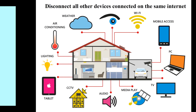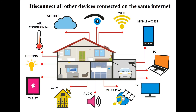Method 4: Disconnect all other devices connected on the same internet. If you don't have any other network available, try disconnecting all devices connected to the same Wi-Fi. With more connected devices, bandwidth is divided amongst them, which may cause the 018 error on Roku. Make sure your Roku device is the only device connected to Wi-Fi to enjoy hassle-free streaming.